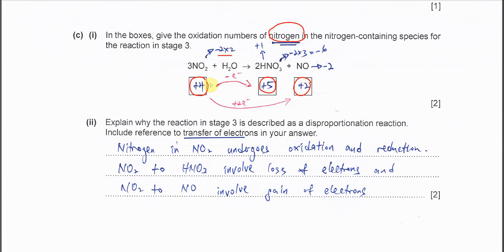So from here we know that nitrogen is going to oxidize and be reduced. From +4 to +5 is being oxidized.